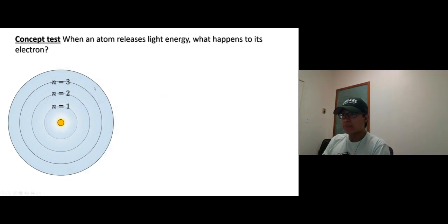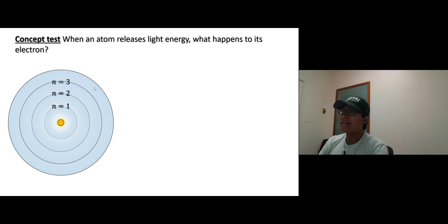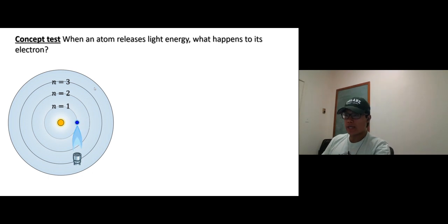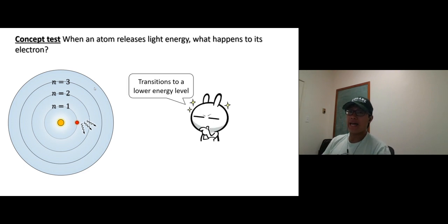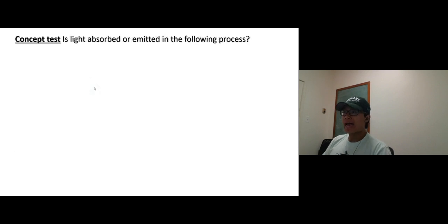Quick concept test: when an atom releases light energy, what happens to its electron? Look at the process — when you heat up the atom, the electron jumps up to a higher energy level. When the atom releases energy, the electron relaxes back down to a lower energy level.